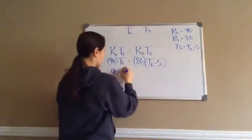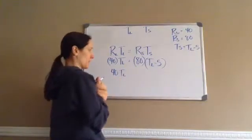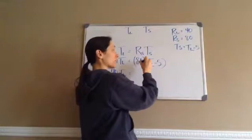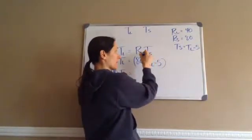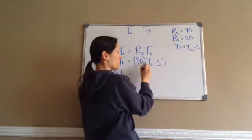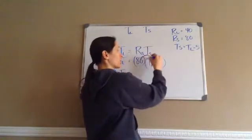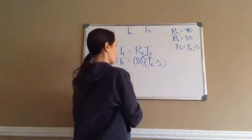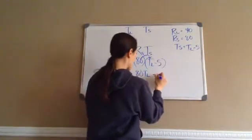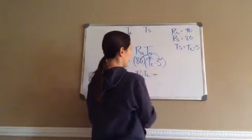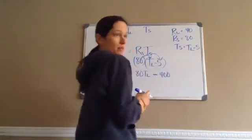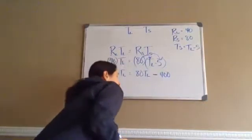So now this just becomes 40TL. This is where it gets confusing because 80 is multiplied by TS, which equals TL minus 5. So you have to use the distributive property. This would be 80TL minus 80 times 5, which is 400. That was the main thing you had to pay attention to.